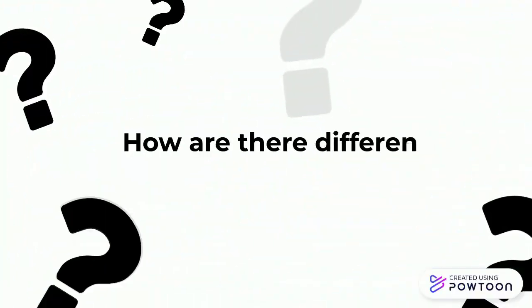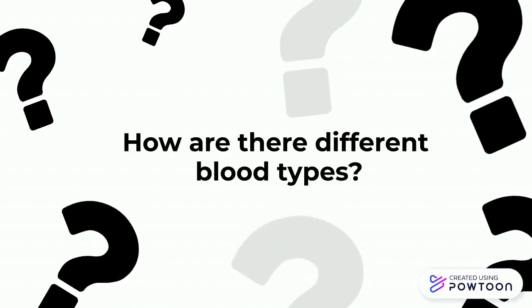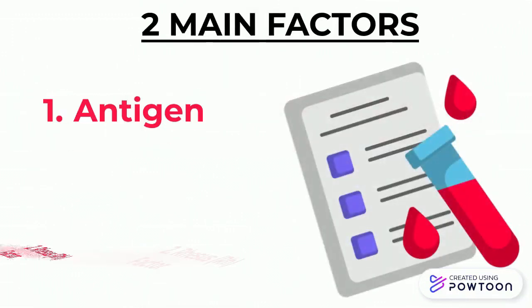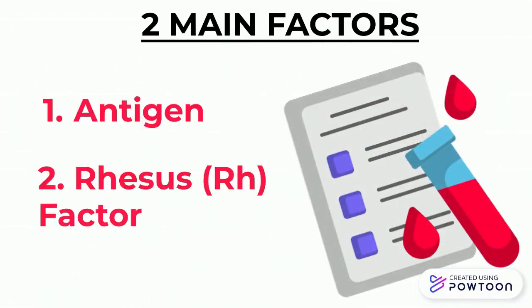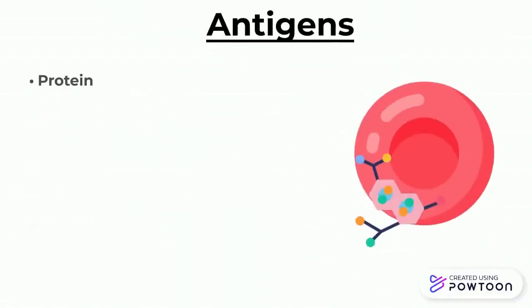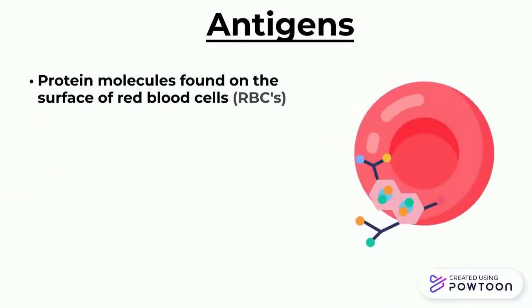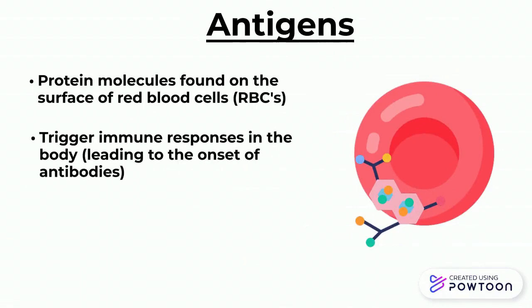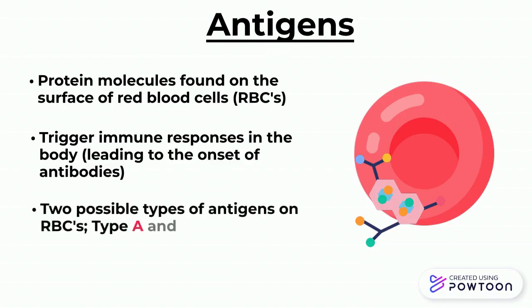If blood has the same functions in all of us, then how exactly are there different types? Well, blood type is a classification of blood based on the presence or absence of two main factors: the type of antigen and the rhesus or RH factor. Antigens are protein molecules found on the surface of red blood cells. They trigger immune responses within the body, leading to the creation of antibodies to attack foreign items like viruses or bacteria. There are two possible types of antigens on your red blood cells: A and B.